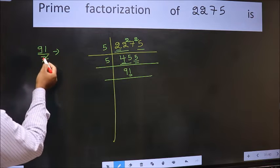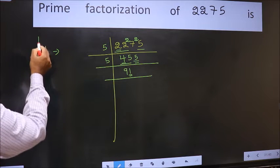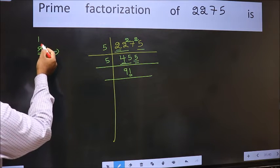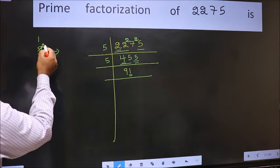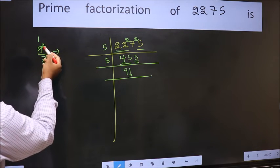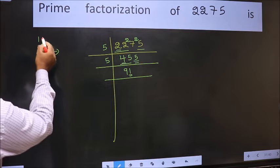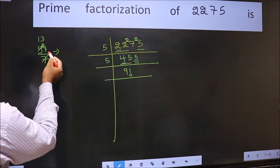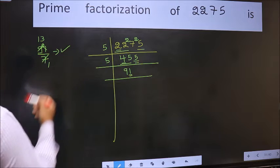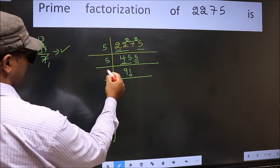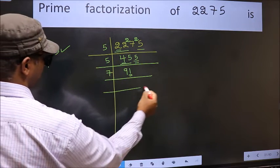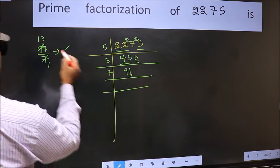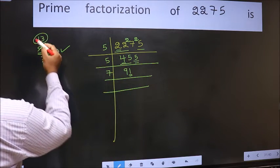Next prime number 7. Let us check divisibility by 7 here. A number close to 9 in 7 table is 7 once, 7. 9 minus 7 is 2, 2 carried forward. 21. When do we get 21 in 7 table? 7 threes, 21. No number has been left out, so this is divisible by 7. So write 7 here and here we should write this number, 13.